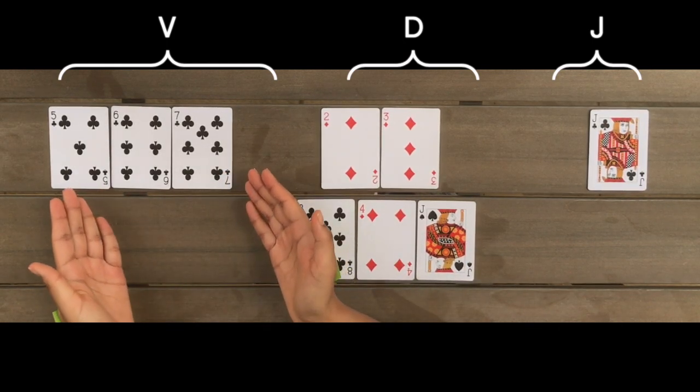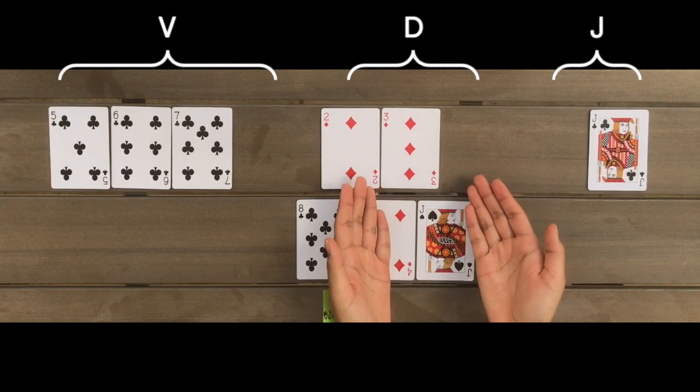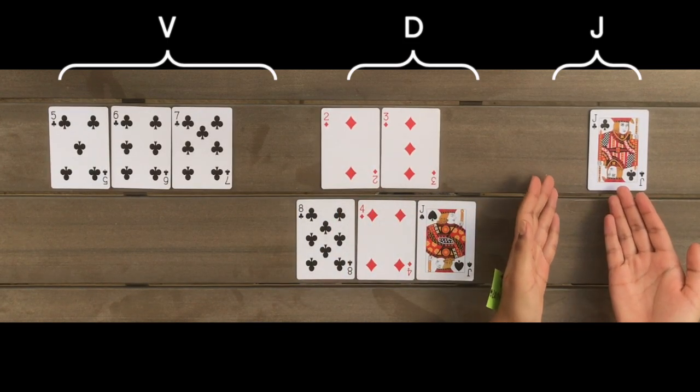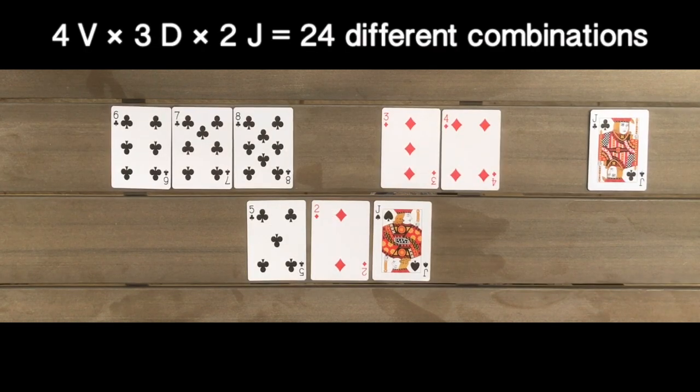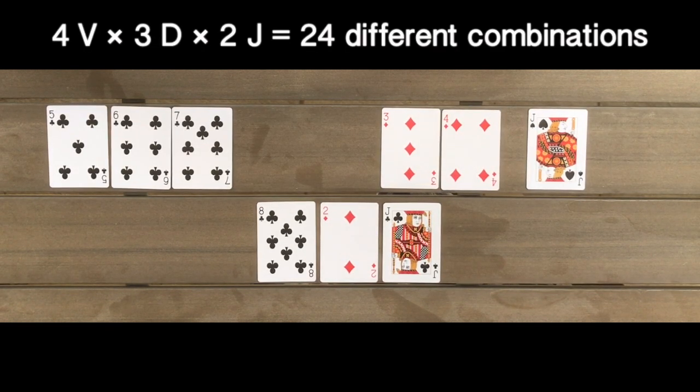Here, I could have chosen any of these cards to be my V, any of these to be my D, and any of these to be my J. With these nine cards, I could have made 4 times 3 times 2 or 24 different combinations.